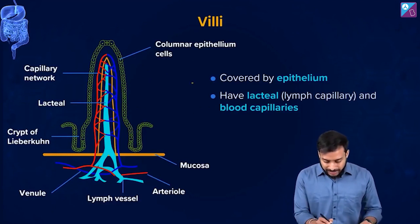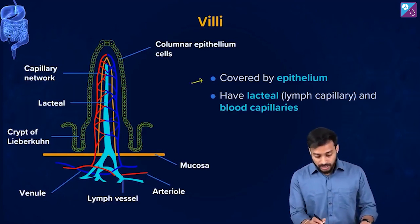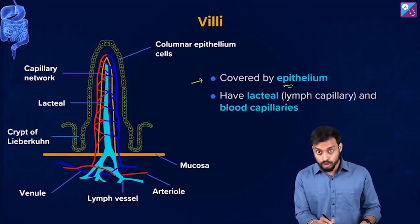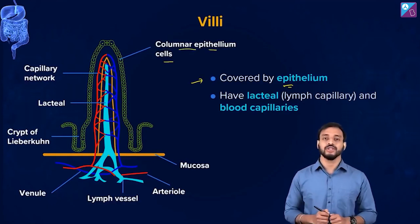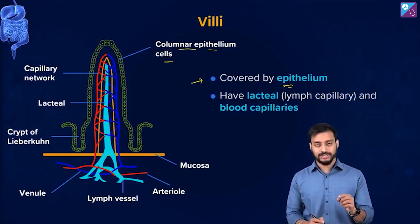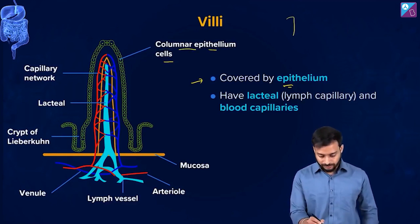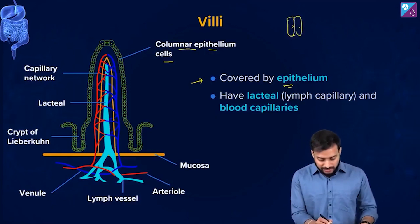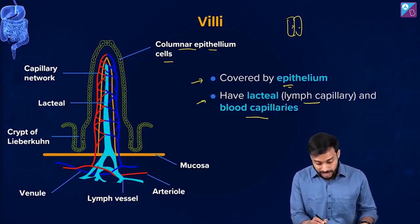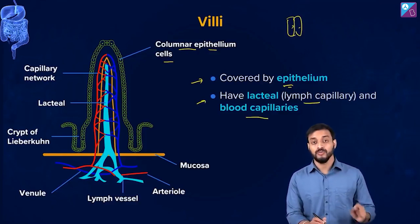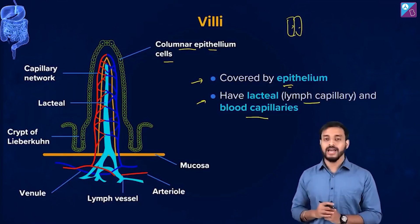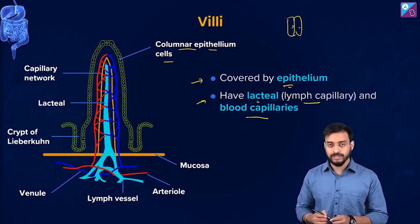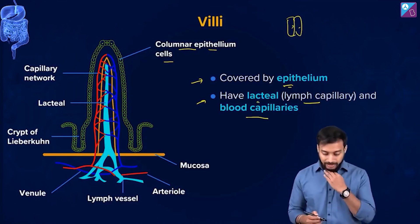These villi are covered by epithelium — more specifically, columnar epithelial cells, which are column-like in shape. The villi also contain lacteals, which are lymph capillaries, and they also have blood capillaries — both are very important.